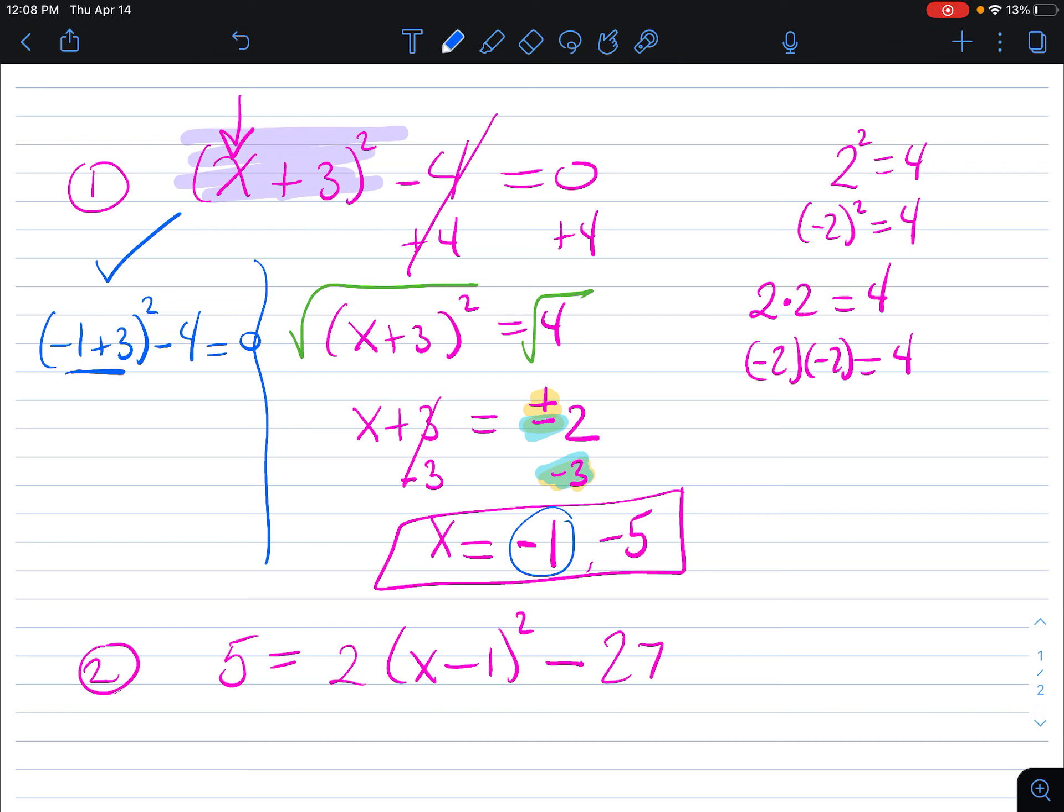So negative 1 plus 3 is 2. 2 squared minus 4 has to be 0. This is 4 minus 4 equals 0. And 0 does equal 0. And you would do the same thing with the negative 5.